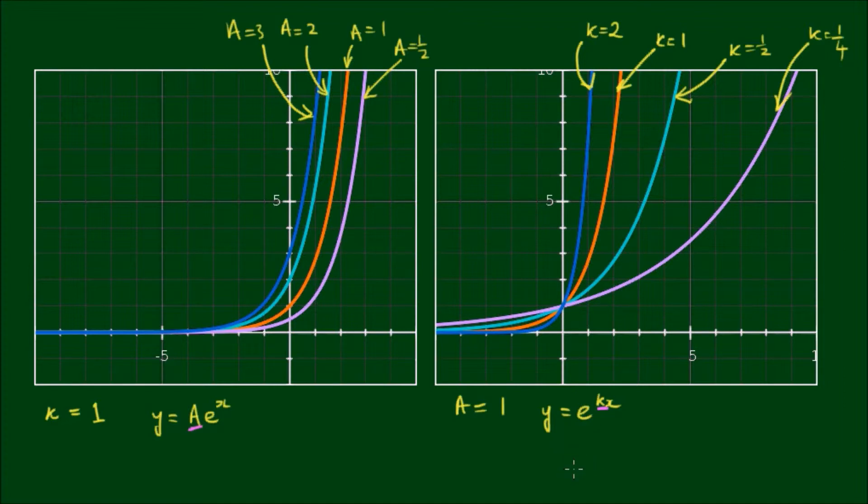The rate of growth has a much bigger impact on the quantity over time. Now A is determined by the initial conditions, and that's the quantity given when x equals 0.